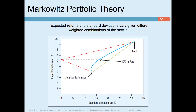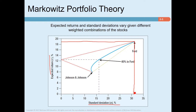Looking at this diagram, the horizontal axis shows standard deviation and the vertical axis shows expected return. You can invest 100% in Ford and earn an expected return of about 19 percent with a standard deviation greater than 30 percent, or invest 100% in Johnson & Johnson and get an expected return of 8 percent with a standard deviation of about 13 percent. Ford is lucrative but has high risk, while Johnson & Johnson offers lower return but lower risk.